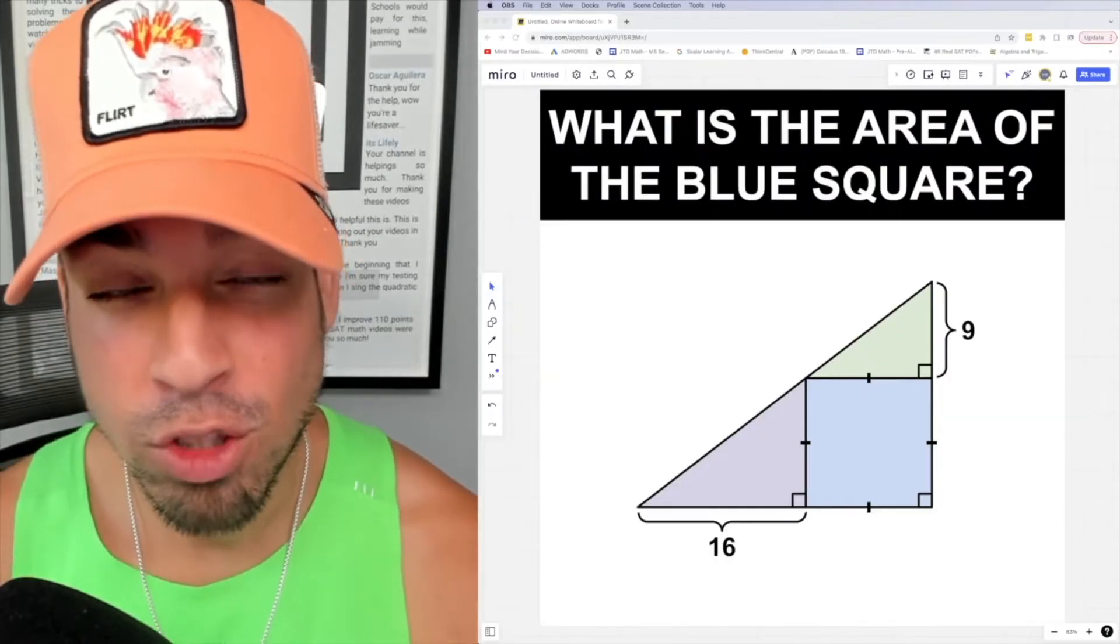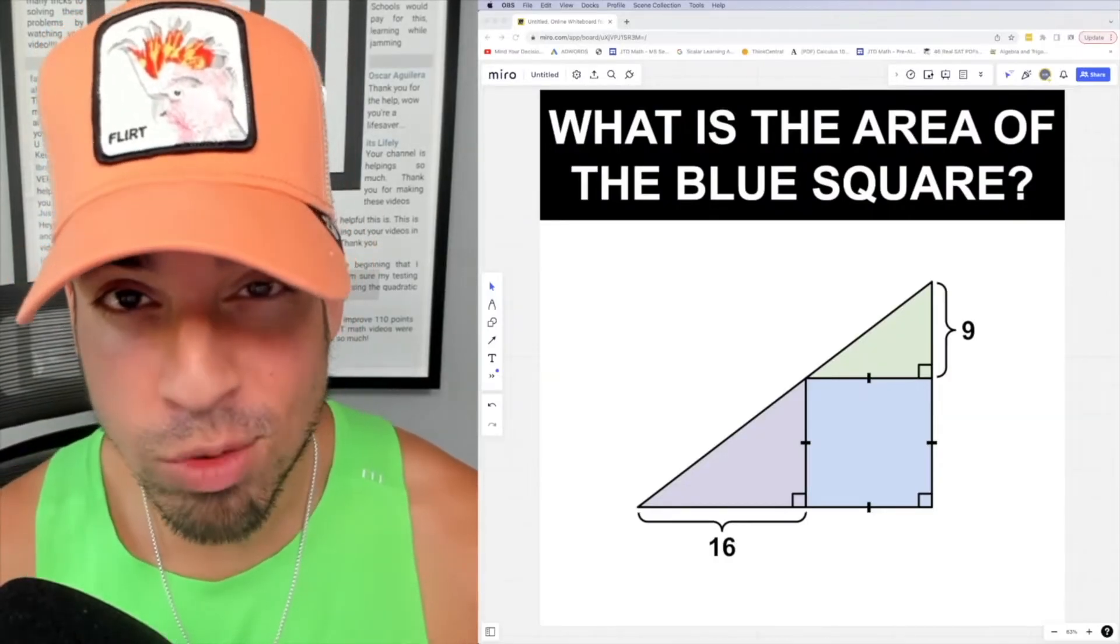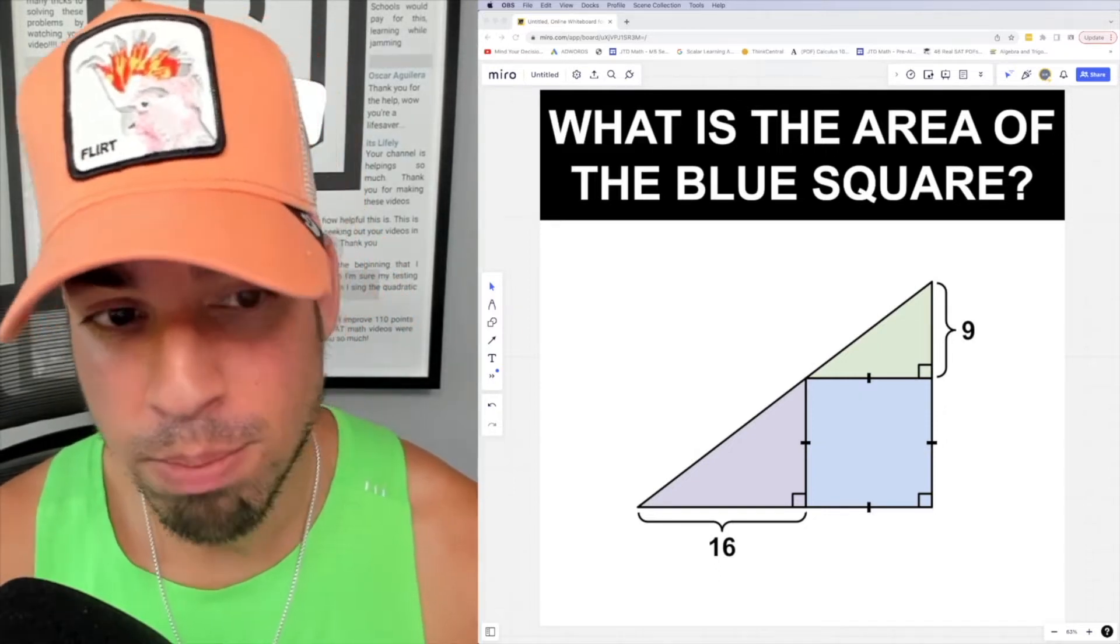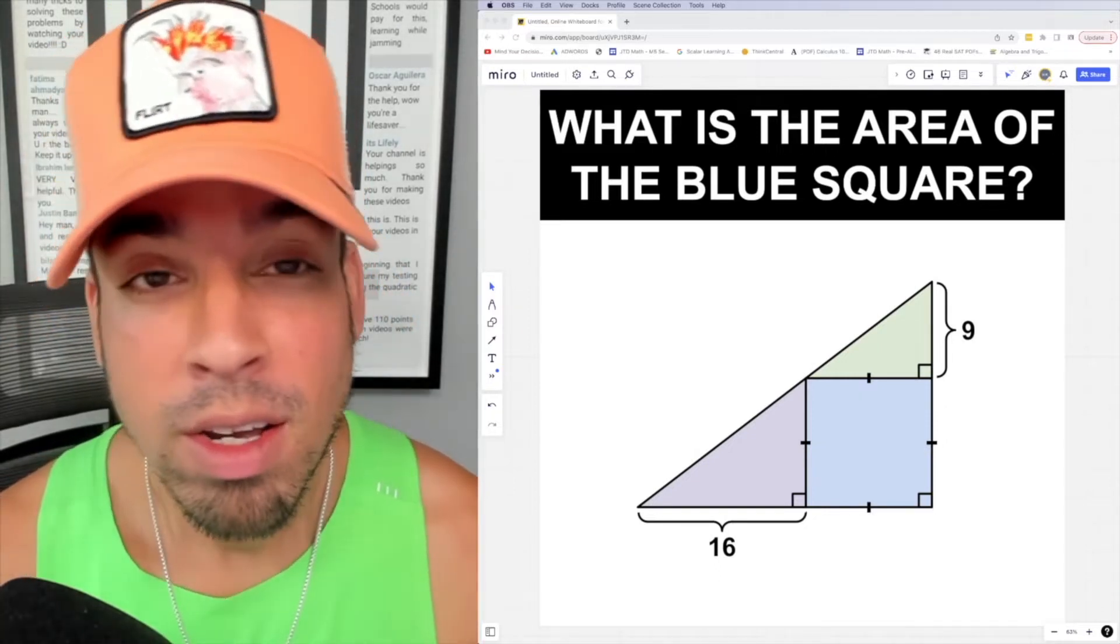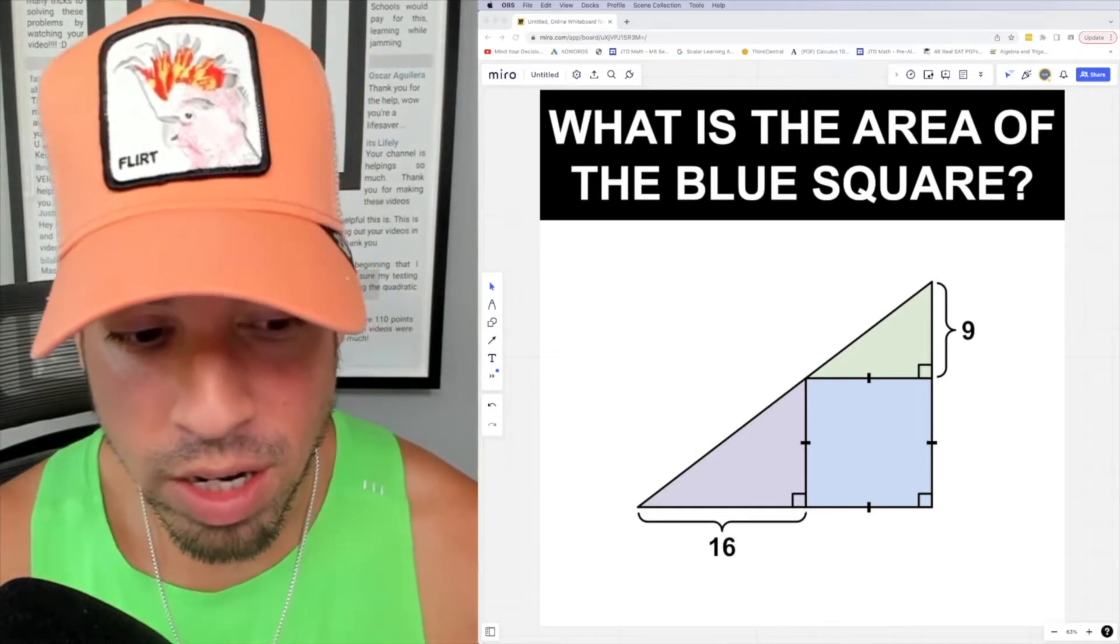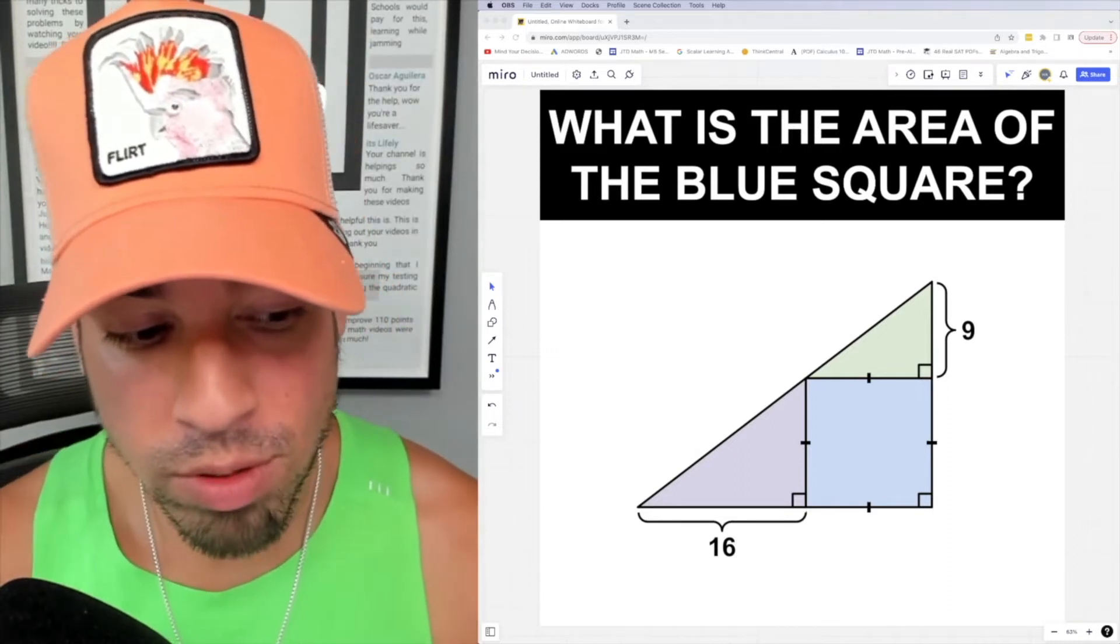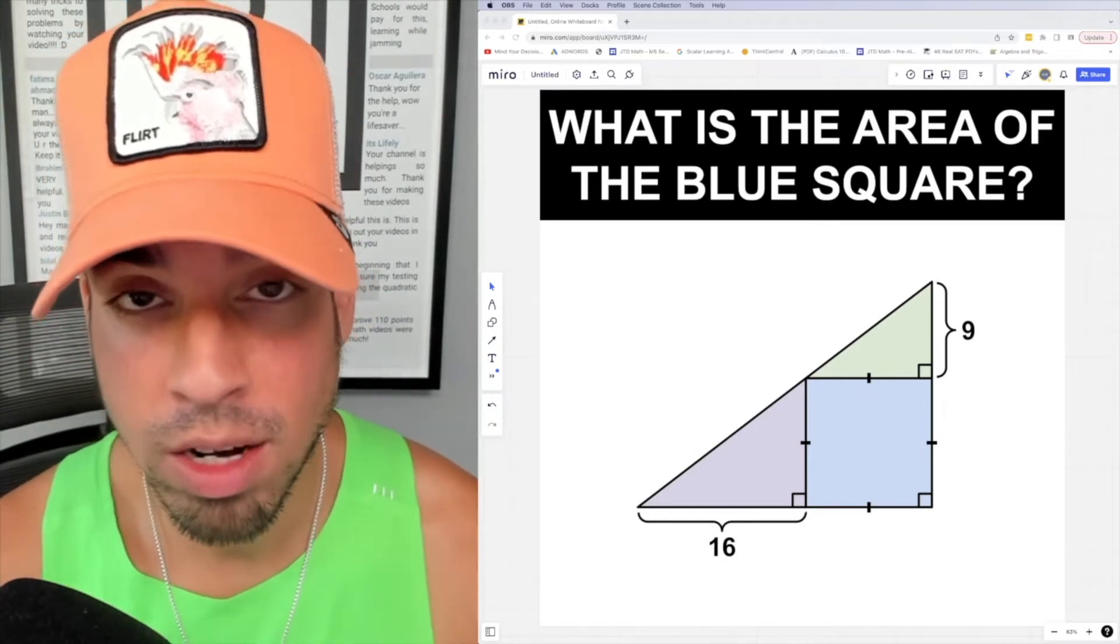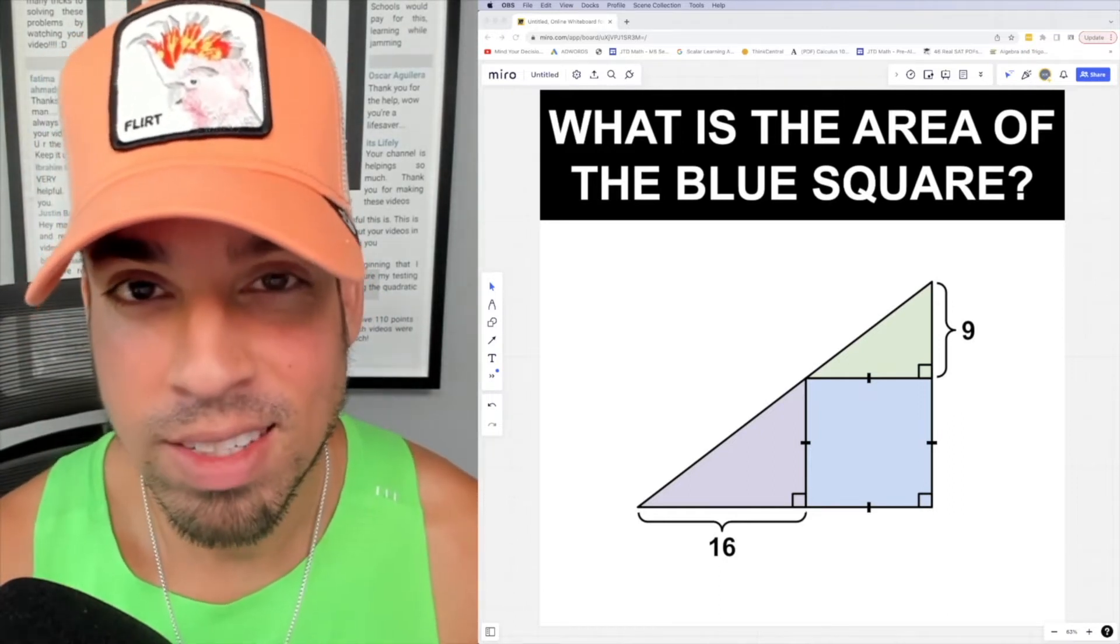What's up everybody and welcome back to another math puzzle. In this one, the question is: what is the area of the blue square? Remember that a square has all sides equal, and notice we've got those symbols for right angles, so those are two right triangles. Hit that pause button and see if you can figure it out.